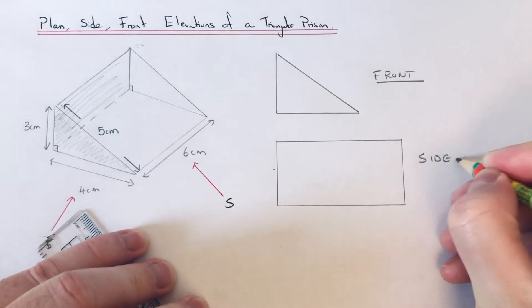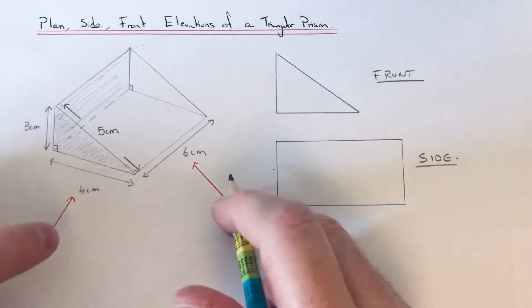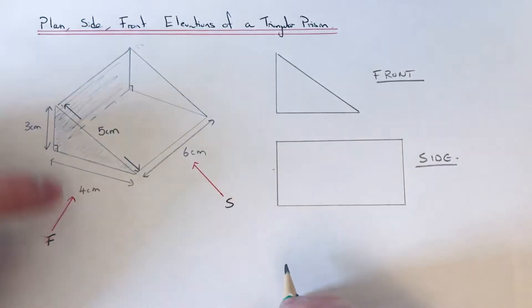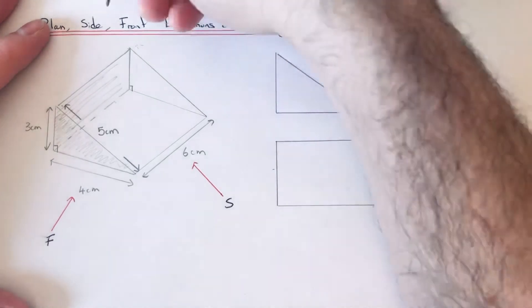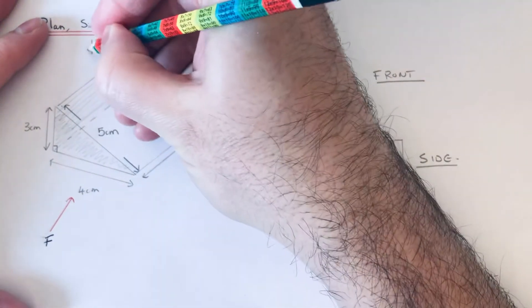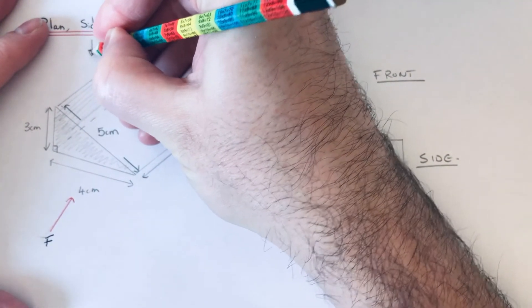And then the final one is the plan. The plan is always looking from the top of the shape, so we're looking down. It's a bit like the satellite view which you get on Google Maps.